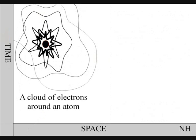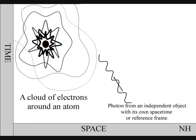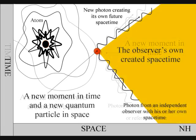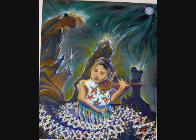This is because to observe the quantum particle, we have to create a photon-electron coupling, collapsing the particle wave function into a new quantum particle in space, and a new moment in time that is part of the observer's own created space-time.